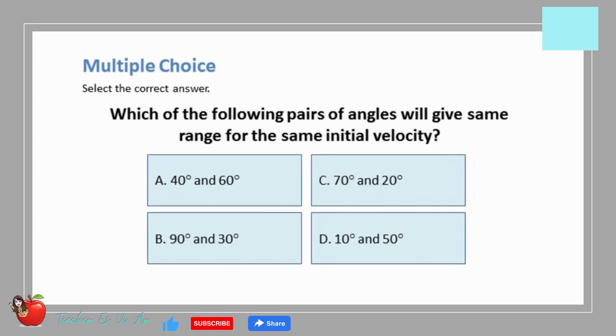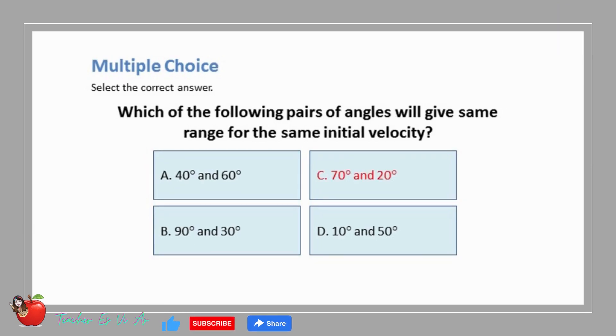Multiple choice, select the correct answer. Which of the following pairs of angles will give same range for the same initial velocity? A. 40 degrees and 60 degrees B. 90 degrees and 30 degrees C. 70 degrees and 20 degrees D. 10 degrees and 50 degrees. The correct answer is C. 70 degrees and 20 degrees.